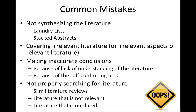Another common mistake is not properly searching for literature — conducting a slim literature review, including literature that's not relevant or that's outdated. For some of you, the topic may not be terribly well researched and you may find key articles from the 1980s or early 90s that you need to cover. But you should make sure a good chunk of the articles you talk about are fairly recent. The conversation in the literature continues to move forward, so you don't want to cite something from 1993 as a key piece of your argument, only to find out that research in 1999, 2007, and 2009 found something totally different using better methods. Make sure you use current literature.